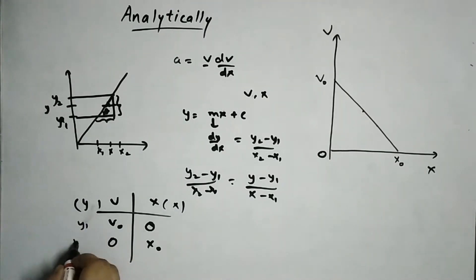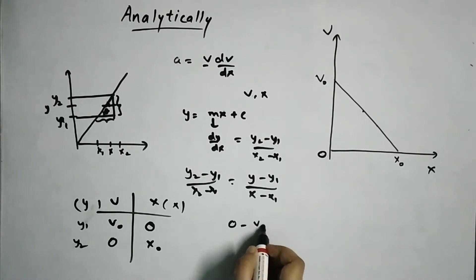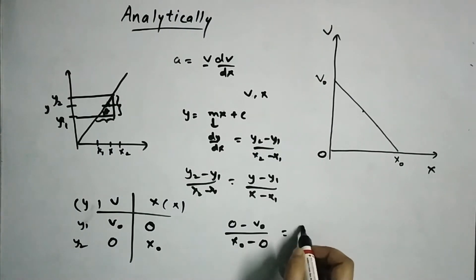So y1 and y2. y2 will be 0 and y1 will be v0. x2 is x0 and this is 0. So y minus v0 upon x minus 0. Hope I am not making any mistakes. So we get the relation,